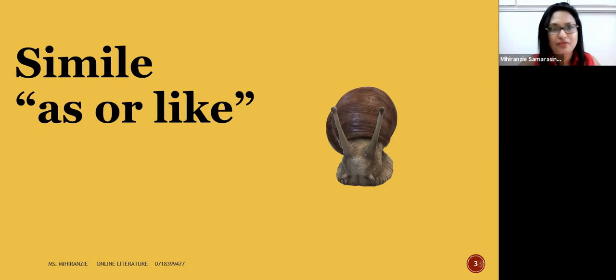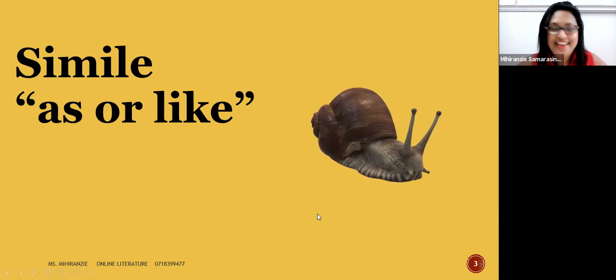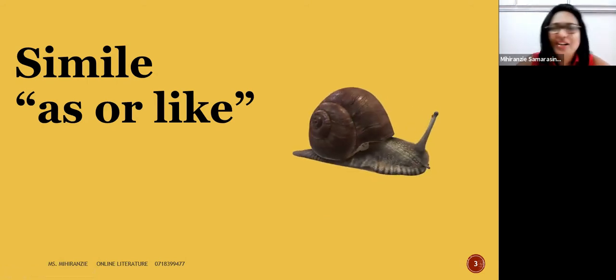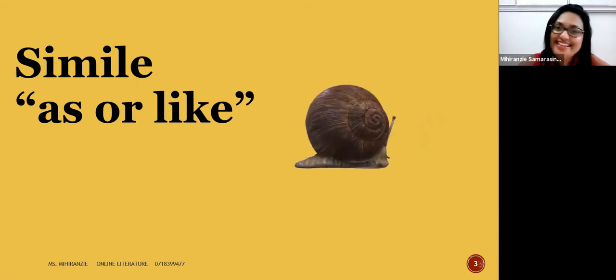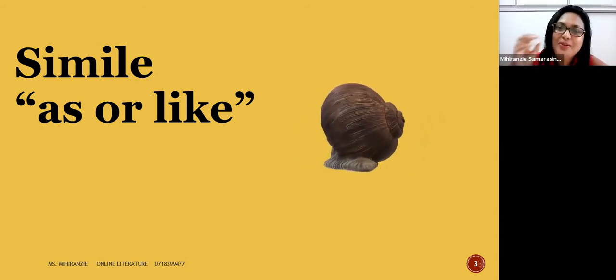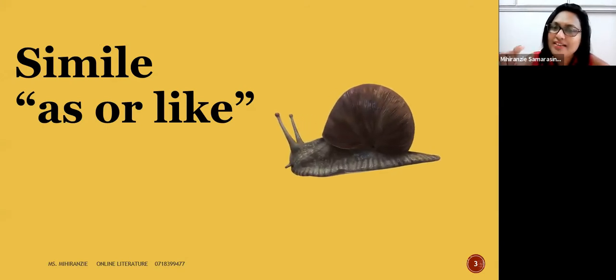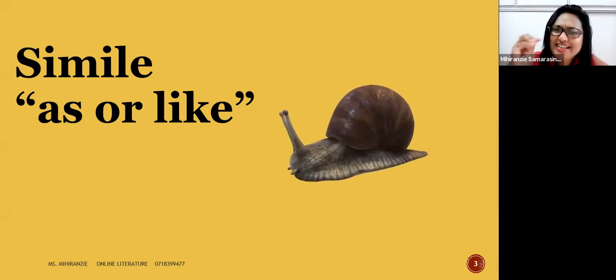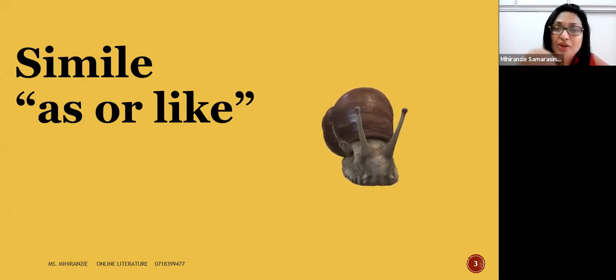Now we'll move on to the first one. First one is a simile. A simile is a comparison using 'as' or 'like'. You see the picture of the snail here. I'm sorry if it's slithery and slimy and not a good thing to look at early in the morning, but it's so fascinating. We never get to look at a snail in this way, so you look at the features and see the slithery skin, the slimy looking skin.